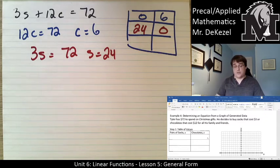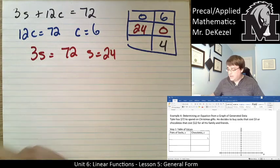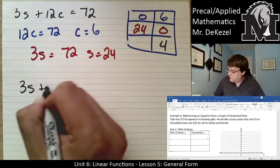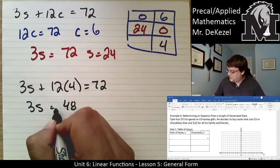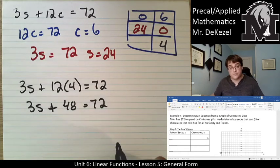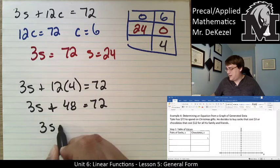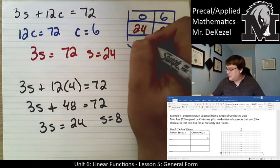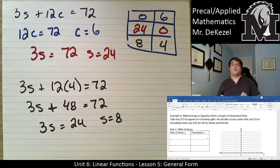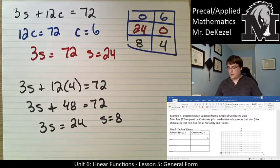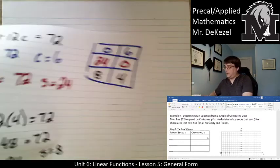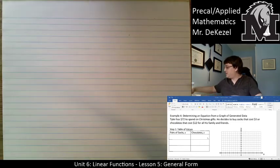Another point: if he buys 4 chocolates — 3s + 48 = 72, so 3s = 24 and s = 8. He could buy 8 pairs of socks and 4 boxes of chocolates — maybe one box of chocolates and two pairs of socks per family member for four family members. Let's plot the line to see all combinations.